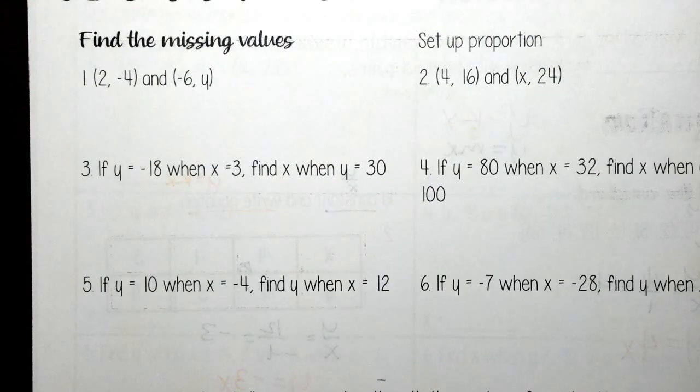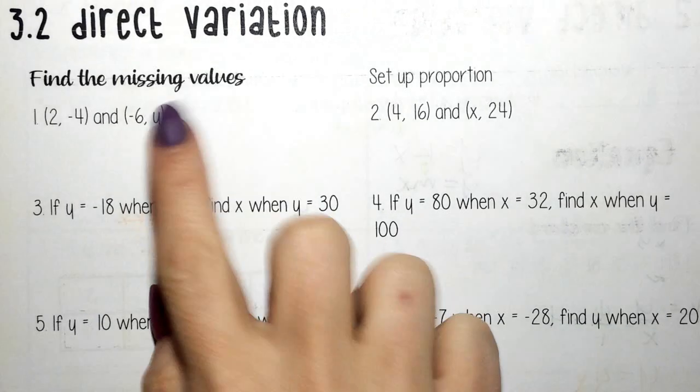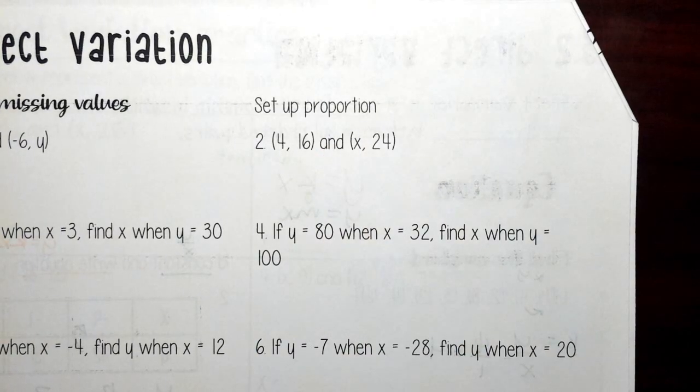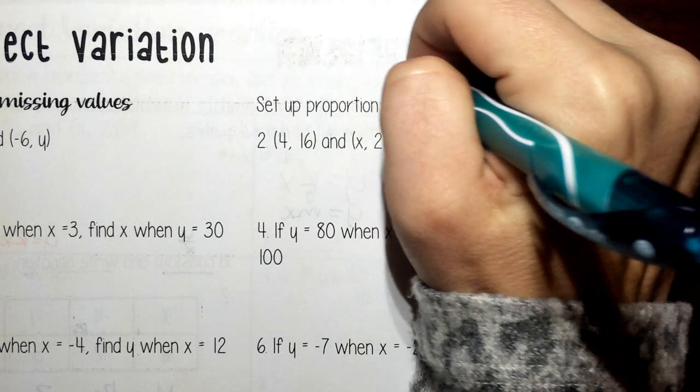So here's what we're going to really be doing with our direct variation. We want to find a missing value. So we're going to set up a proportion, and our proportion is going to be the same each time.